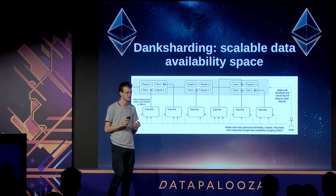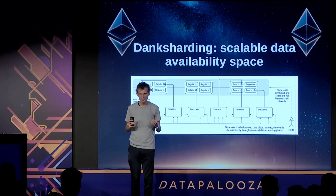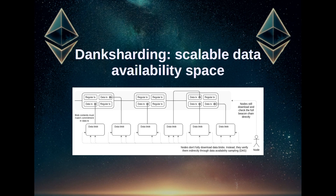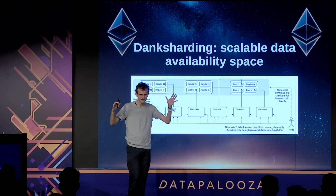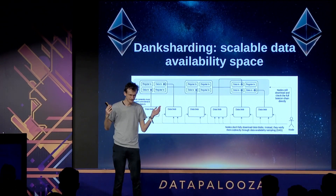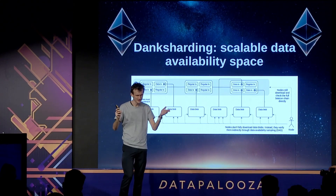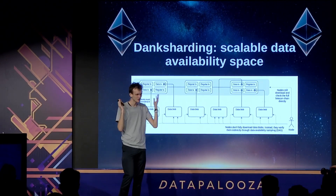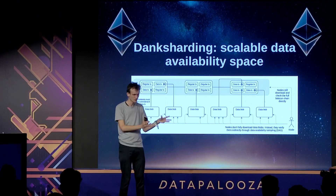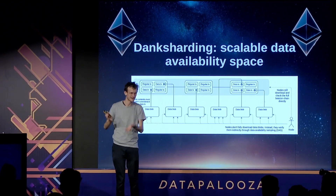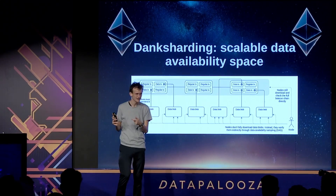This is the problem that data availability systems solve. DA systems try to create the guarantee, for as large blobs of data as possible, that a blob was actually published at a specific point in time — so anybody at that point in time had access to it. The simplest way is to just have a blockchain publish a block, have everyone download it, and use a consensus algorithm to agree either that the block was available and part of canonical history, or that it was not and should be ignored.